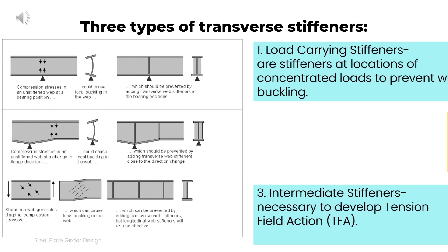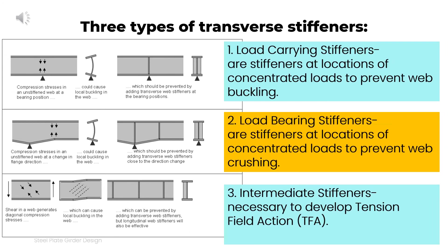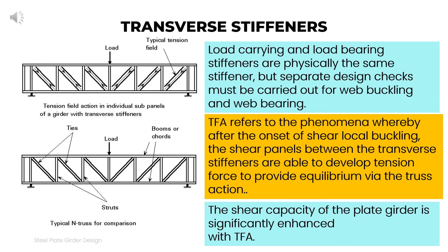There are three types of transverse stiffeners: load carrying stiffeners, load bearing stiffeners, and intermediate stiffeners. Load carrying and load bearing stiffeners are physically the same stiffener, but separate design checks must be carried out for web buckling and web bearing.